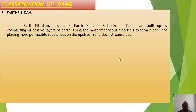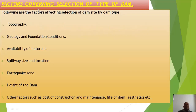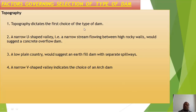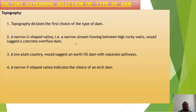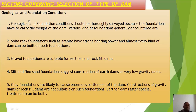Factors governing selection of type of dam include: topography, geological and foundation conditions, availability of materials, spillway size and location, earthquake zone, height of dam, and other factors such as cost of construction, maintenance, life of the dam, and aesthetics. Topography dictates the first choice — a narrow U-shaped valley with high rocky walls suggests a concrete overflow dam; a low plain country suggests an earthen dam with a separate spillway.